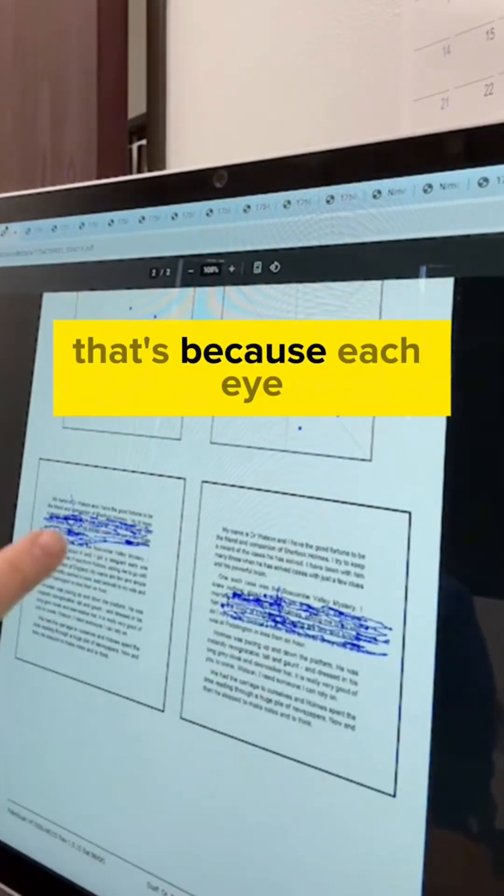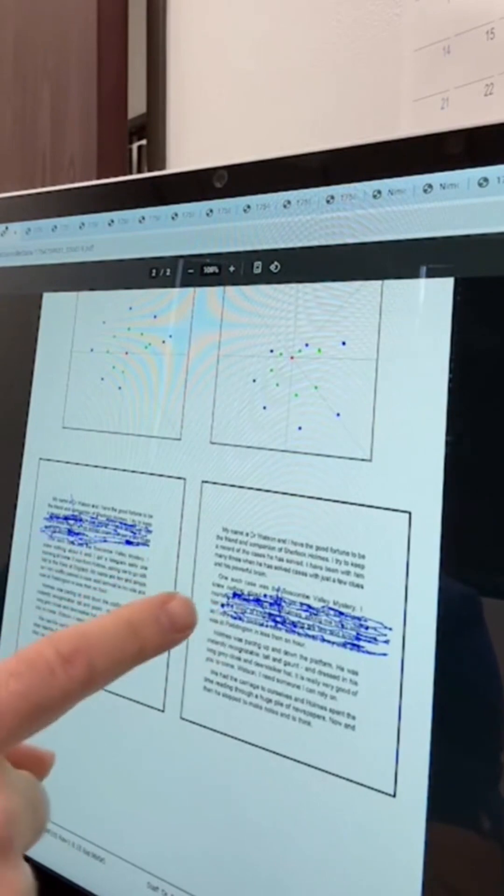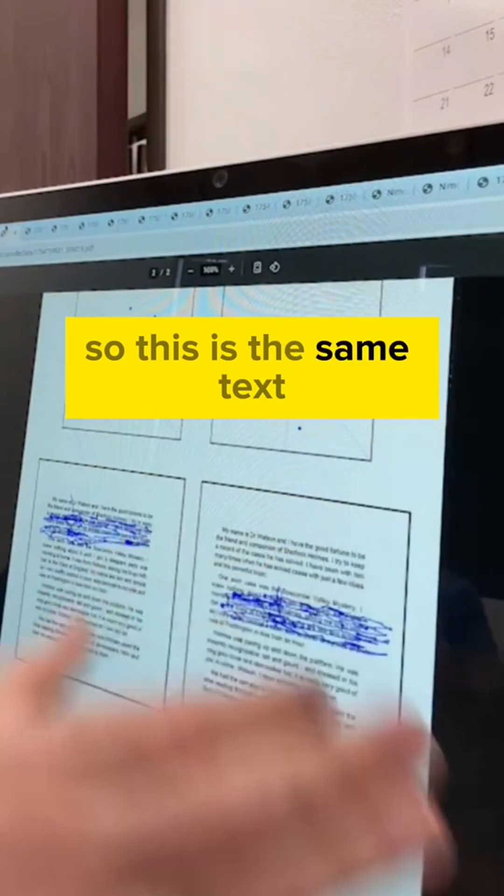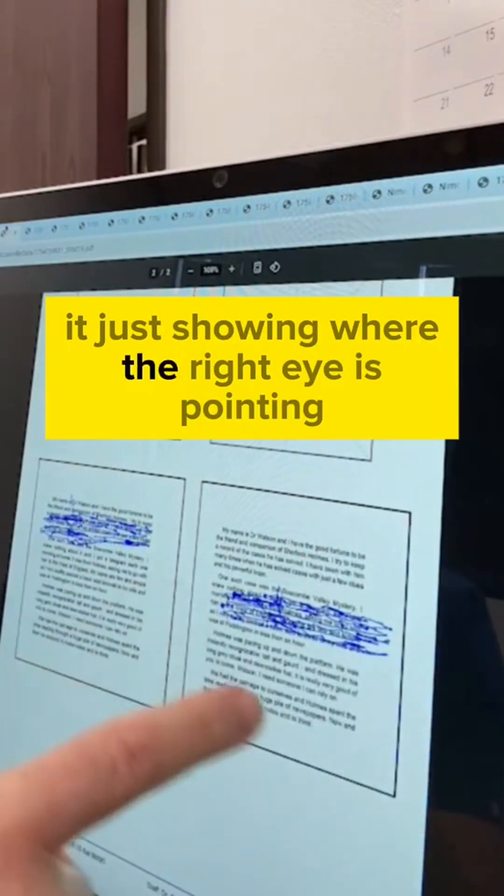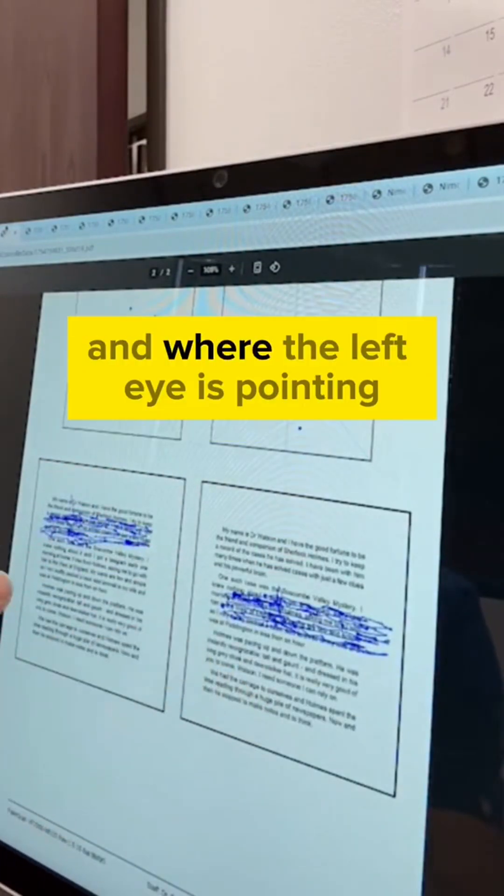That's because each eye is pointing in a different direction at the same time. So this is the same text. It's just showing where the right eye is pointing and where the left eye is pointing.